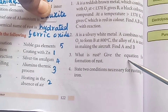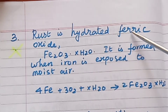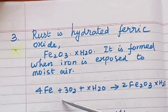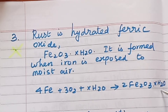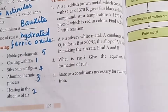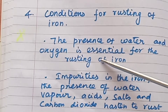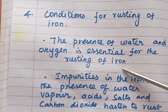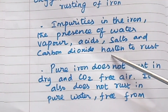Question 3: What is rust? Give the equation for formation of rust. This is a very important 2-mark question. Rust is hydrated ferric oxide (Fe2O3·xH2O). It is formed when iron is exposed to moist air. Equation: 4Fe + 3O2 + xH2O → 2Fe2O3·xH2O. Question 4: State two conditions necessary for rusting of iron. This is a repeated important question. Conditions: First, the presence of water and oxygen is essential for rusting of iron. Second, impurities in iron — the presence of water vapor, acid, salt, and carbon dioxide tend to accelerate rusting.